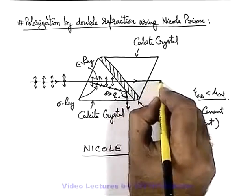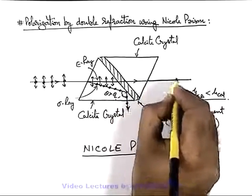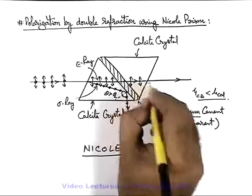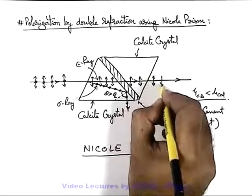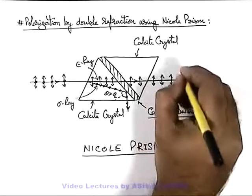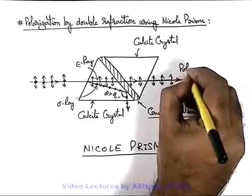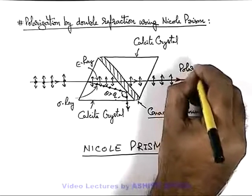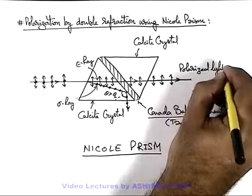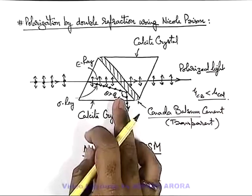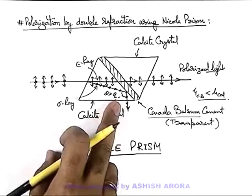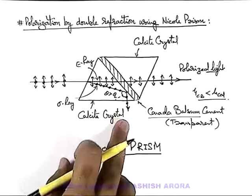Finally, the e-ray, which has vibrations in the plane of incidence, passes through. So this is the polarized light which comes out from the Nicol prism, and by using the phenomenon of total internal reflection, the o-ray is separated.